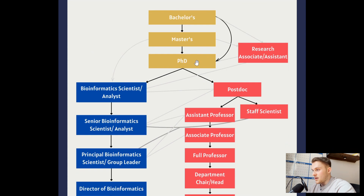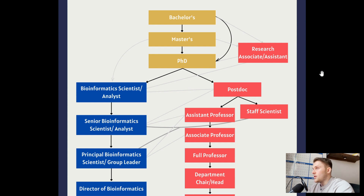If you're going down the academic route after a PhD, you can take a postdoc. This position allows you to gain additional research experience, develop new skills, and establish a publication record. After your postdoc, you can become a staff scientist or research scientist — a position at a university focused on conducting research. This role may or may not have teaching responsibilities, as teaching is more associated with professor-type roles.